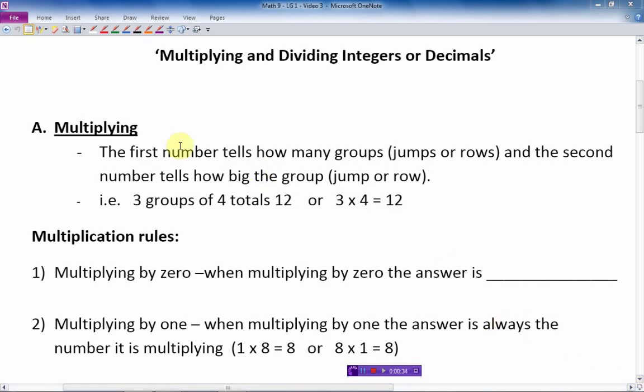It's fun to talk about multiplying. The first number tells us how many groups or rows, the second number tells us how big the group is. So 3 groups of 4 totals 12, or in other words, 3 times 4 is 12.